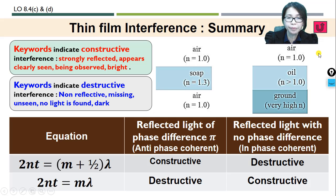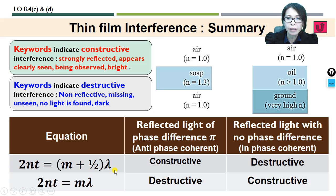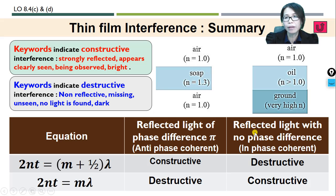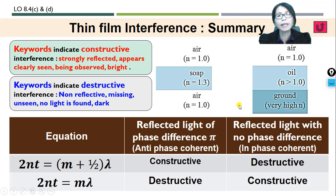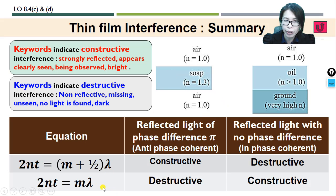First, boys and girls, we have two equations to solve problems related to interference of thin films. Which equation we need to use depends on whether our reflected light has a phase difference of pi radian or there is no phase difference between the reflected light. In this video, I'm going to show you how to identify the correct equation according to the situation given and solve the problem related to thin film interference.